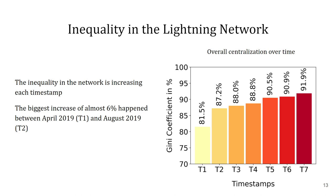We now take a look at how much the inequality has risen over the period of our examination. The Gini coefficient is slightly increasing each timestamp, with the biggest jump of 6% being between April and August 2019, or T1 and T2. Seeing this, we come to the conclusion that the Lightning Network has become more and more centralized over the past years, having only a few very influential nodes through which most of the paths are routed. It is not beneficial for the robustness of the network, as these nodes can be targets for attacks and could disrupt the network in the case of failure. But not only attackers could exploit the situation, but also the individuals controlling these nodes.